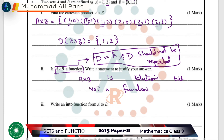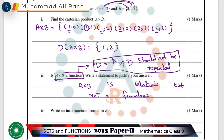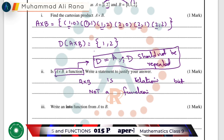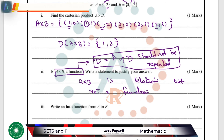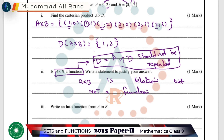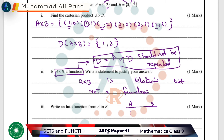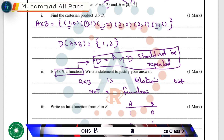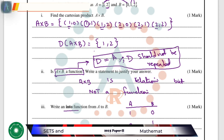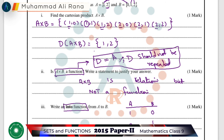In the third part, we have to find an into function from Set A to Set B. Let's make an into function. In Set A we have elements 1 and 2, and in Set B we have elements 0, 1, and 2. Let's recall what an into function is.